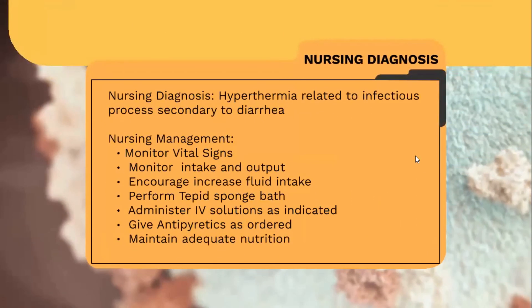Another nursing diagnosis is hyperthermia related to infectious process secondary to diarrhea. Nursing management includes monitoring vital signs, monitoring intake and output, encouraging increased fluid intake, performing tepid sponge baths, administering IV solutions as indicated, giving antipyretics as ordered, and maintaining adequate nutrition.